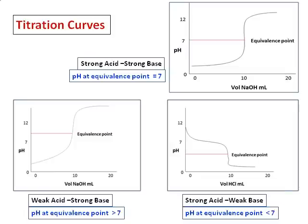So what you have to really remember in this titration curve is that for a strong acid-strong base, the pH at the equivalence point is 7. And when the acid is weak and the base is strong, the pH at the equivalence point is greater than 7. And the strong acid-weak base, the pH at the equivalence point is less than 7.